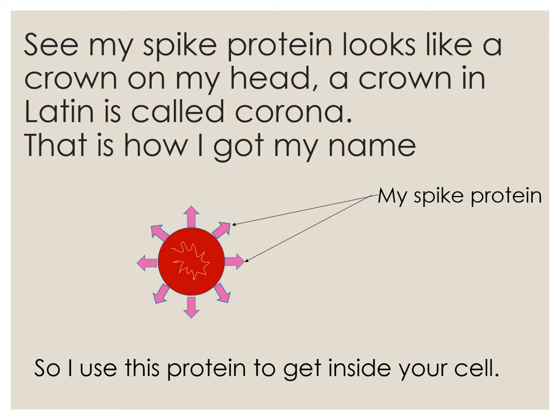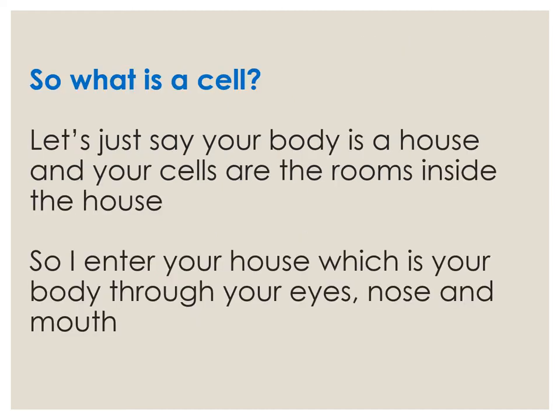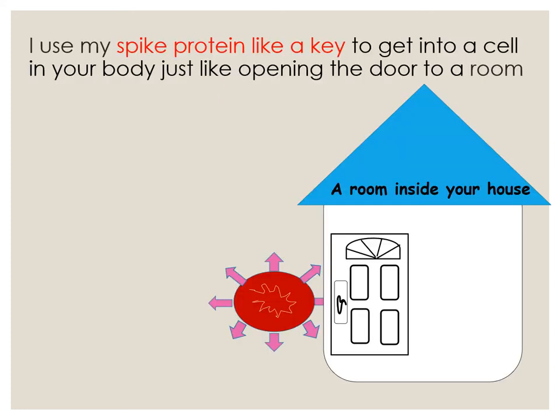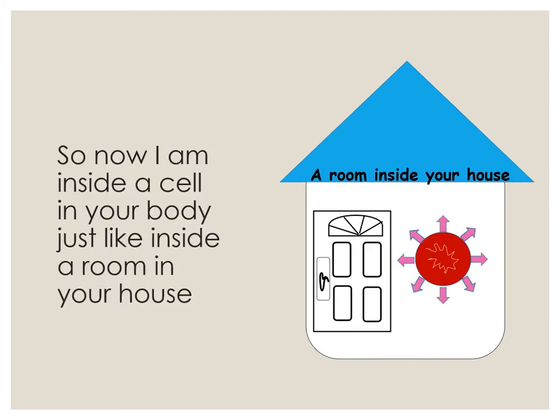I use this protein to get inside a cell. So what is a cell? Let's just say your body is a house and your cells are the rooms inside the house. I enter your house, which is your body, through your eyes, nose, and mouth. I use my spike protein like a key to get into a cell in your body, just like opening the door to a room. Now I'm inside a cell in your body, just like inside a room in your house.